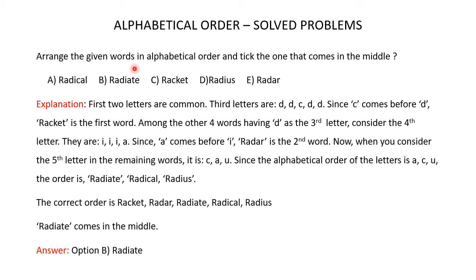Arrange the given words in alphabetical order and tick the one that comes in the middle. You are given five words: Radical, Radiate, Racket, Radius, and Radar. You have to arrange these five words in alphabetical order and find out which comes in the middle. When you look at these five words, the first two letters RA are common in all five words, so you have to consider the third letter: D, D, C, D, and D. Since C comes before D, clearly Racket is the first word.